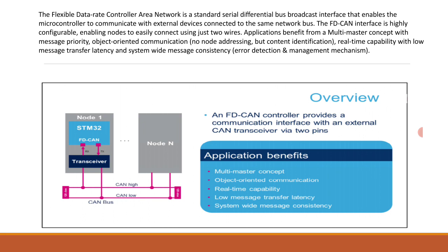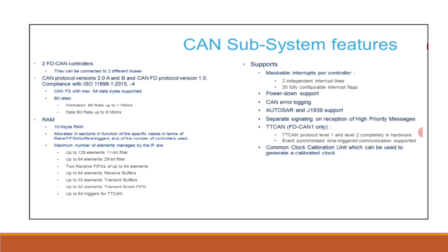Let's have a quick look at CAN subsystem features in the STM32 H7 family. There are two FD CAN controllers that can be connected to two different buses. CAN protocol version 2.0A and B, and CAN FD protocol version 1.0, compliant with ISO 11898-1 2015. CAN FD supports a maximum of 64 data bytes. Supported bit rates are: arbitration bit rate up to 1 Mbps, and data bit rate up to 8 Mbps.